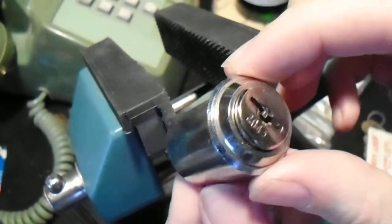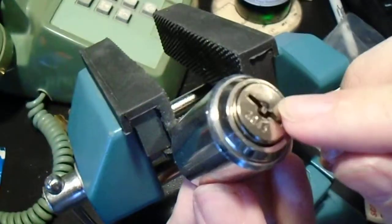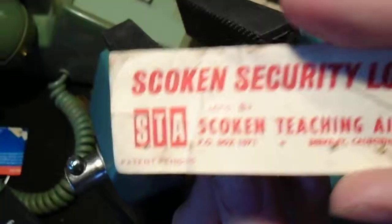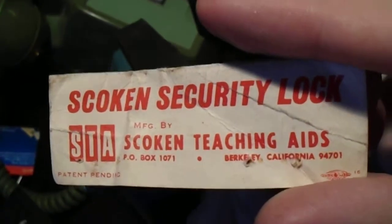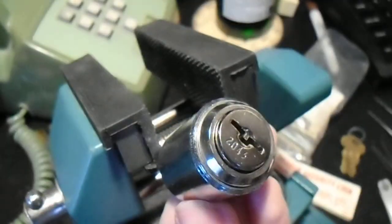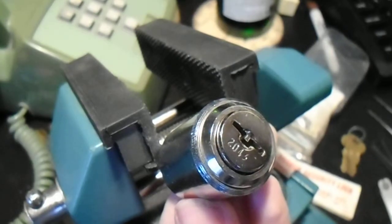Hey, everybody. Today we've got something a little bit different. This is a Skokin Security Lock from Skokin Teaching Aids, and it's a variety of wafer lock called a Chicago lock. You don't see these very often.